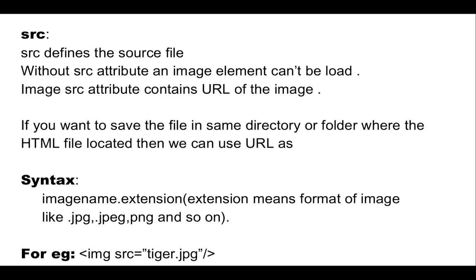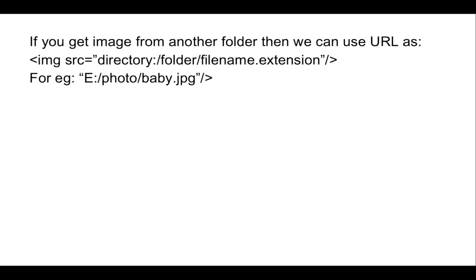Extension means the format of the image, like jpg, jpeg, png, and so on. For example, the img tag with attribute src and value tiger.jpg. If you get an image from another folder, then the URL would be: open the image tag, src, then directory first, then folder, then file name, then extension. For example, directory is E, folder name is photo, file name is baby, extension is jpg.